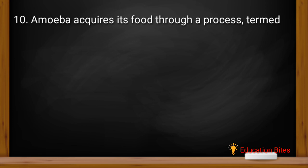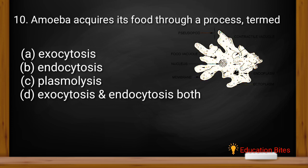So the last question is, amoeba acquires food through the process termed as. The answer is B, endocytosis.